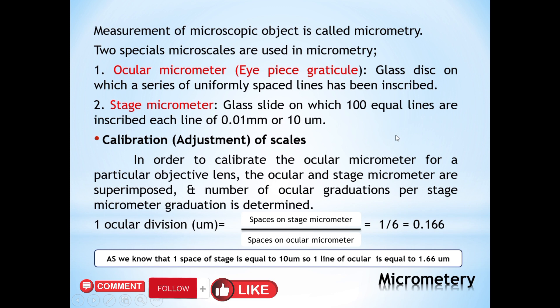To calibrate the ocular micrometer for a particular objective lens, the ocular and stage micrometers are superimposed. The number of ocular graduations per stage micrometer graduation is determined using the formula: one ocular division equals spaces on the stage micrometer divided by spaces on the ocular micrometer, which equals 0.166. Since one stage space equals 10 micrometers, one ocular line equals 1.66 micrometers.